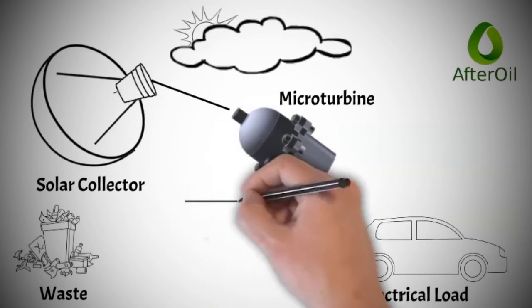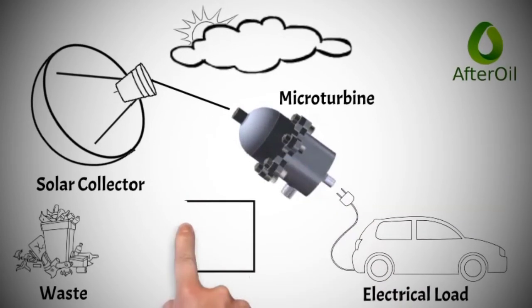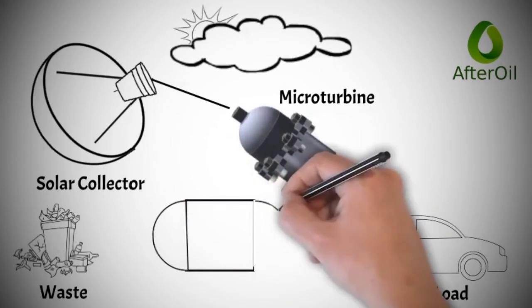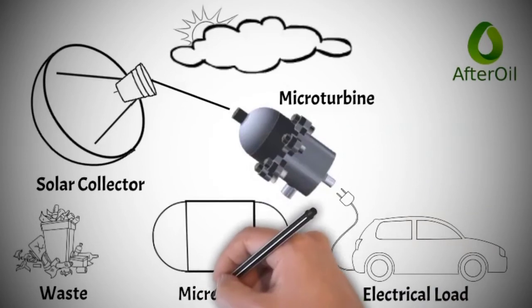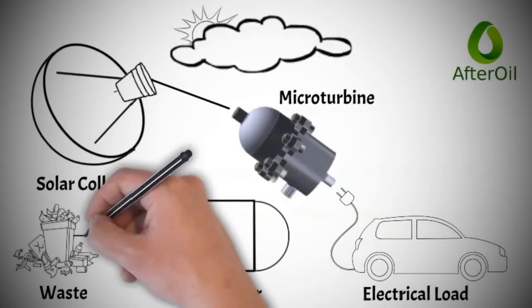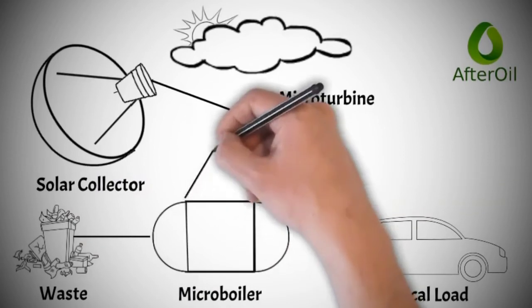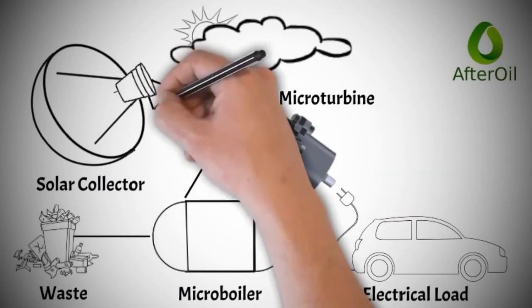No double investment is needed because it only takes one microturbine, micro boiler and pipelines. The only double is the heat source, namely the solar collector and waste or biomass combustion equipment. This arrangement cannot be done if you use PV or solar panels for electric generation system.